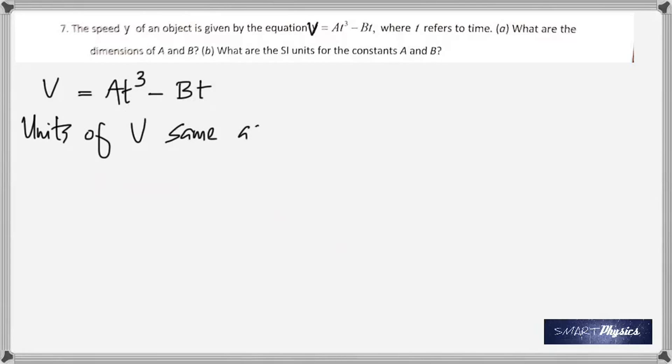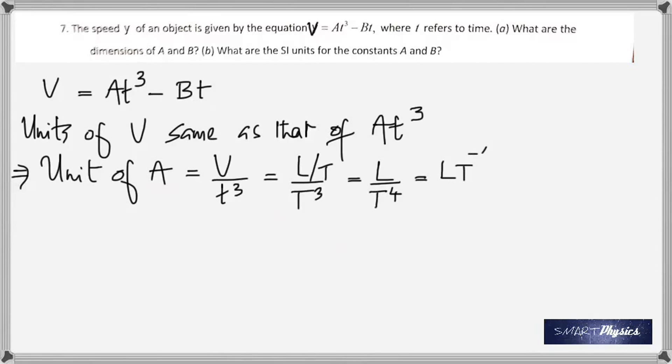So, the unit of A T cube and the unit of v must be the same. Therefore, you can find the unit of A because it should be velocity by T cube and the dimension of velocity is L by T, because velocity is displacement by time. So, that makes it L by T to the power 4. Taking T to the power 4 to the top, you make it T to the negative 4. So, you get the, actually this is the dimension of A. I've written it as the unit but it's the dimension.